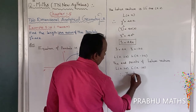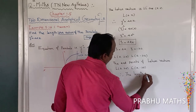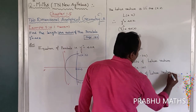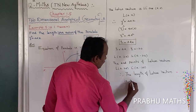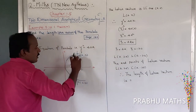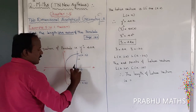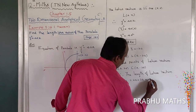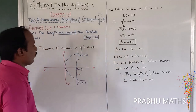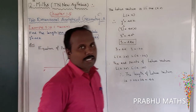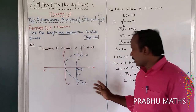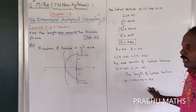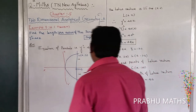The length of the latus rectum equals the distance between y = 2a and y = -2a, which is 2a + 2a = 4a. So the length of the latus rectum is equal to 4a for all directions of the parabola — rightward open, leftward open, upward open, and downward open — the latus rectum is always 4a.